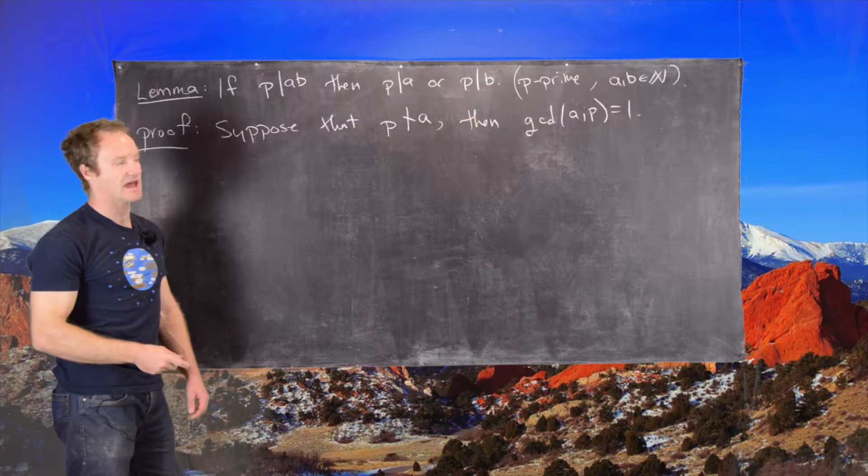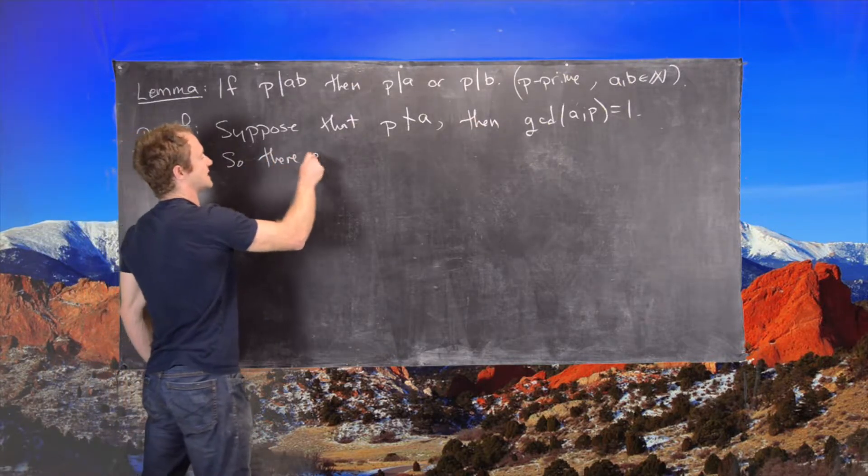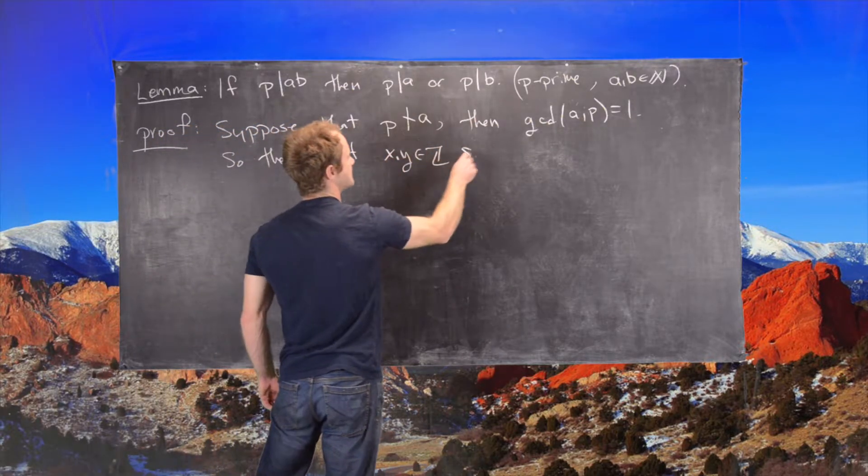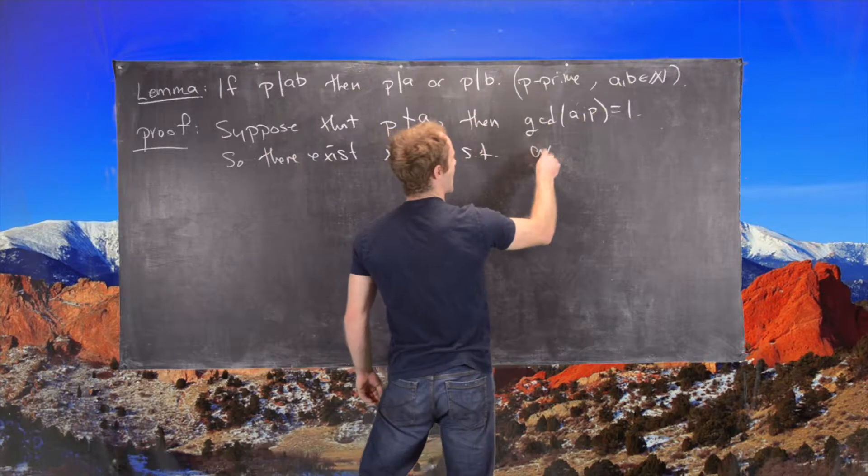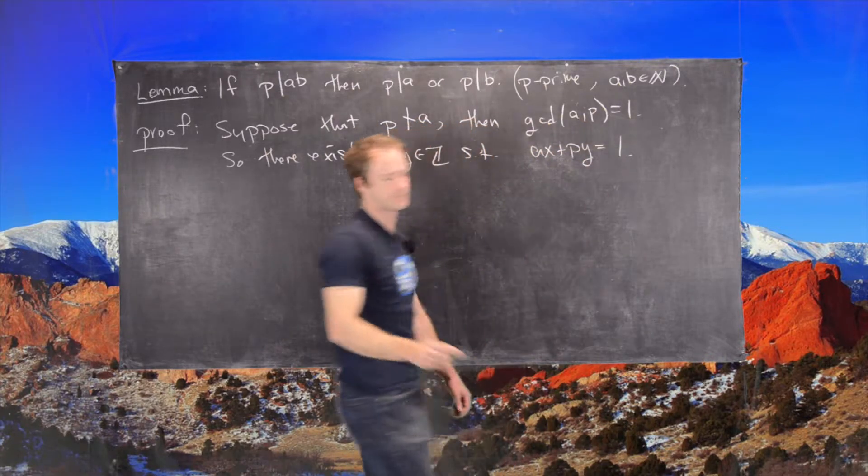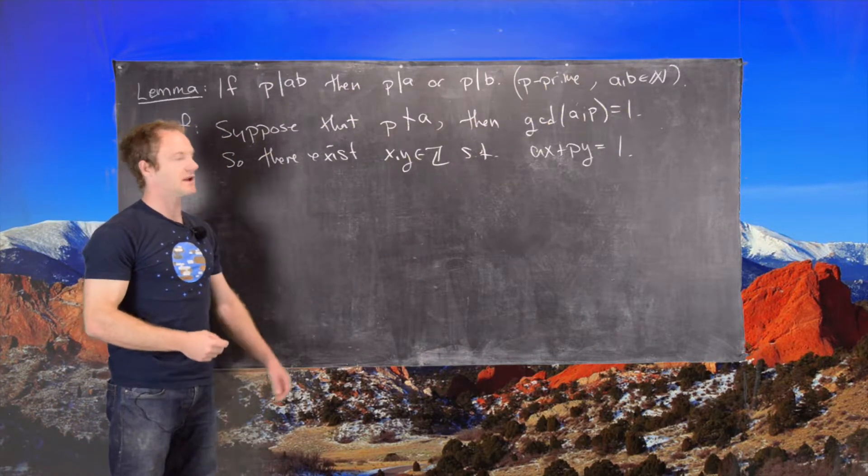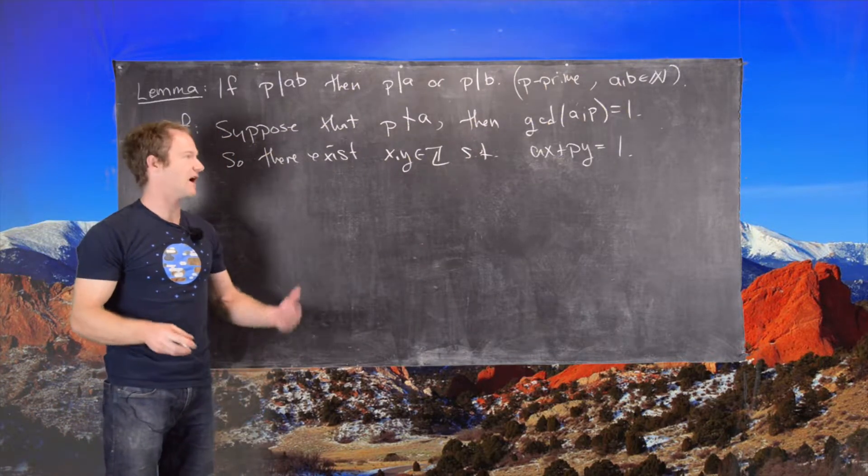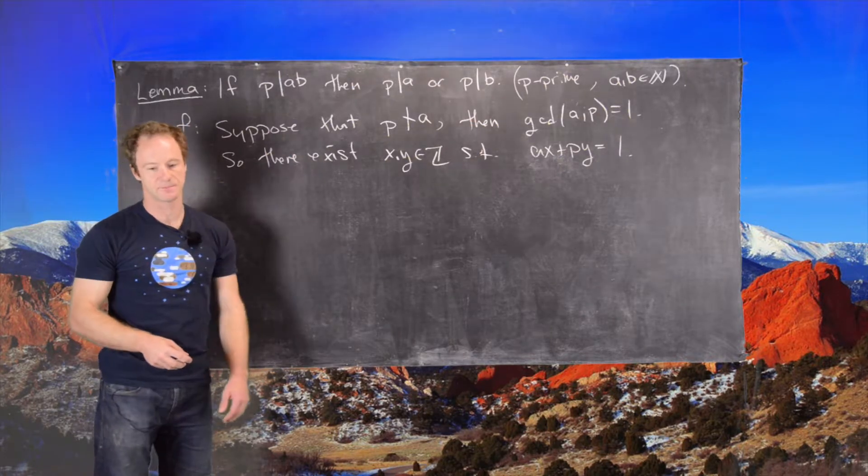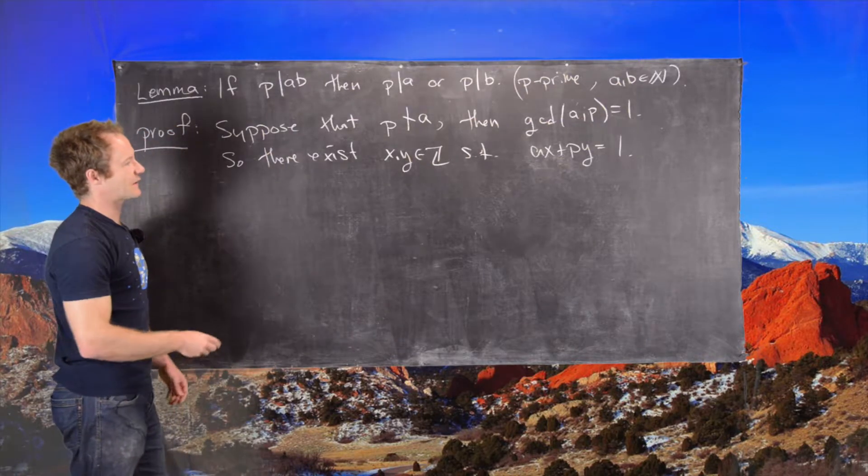Since we know the GCD of A and P equals one, we know there exist integers X and Y such that AX plus PY equals one. If you were given numbers A and P, you would find this X and Y using the extended Euclidean algorithm. But we just need the existence of them.